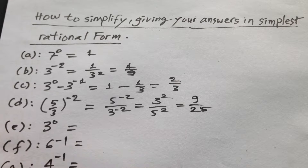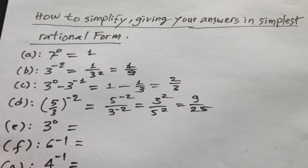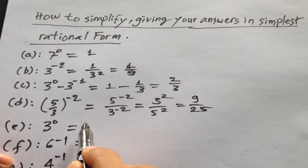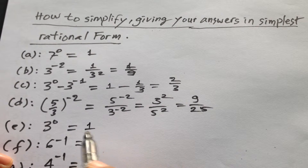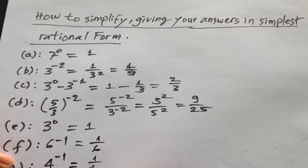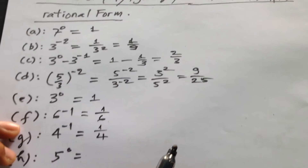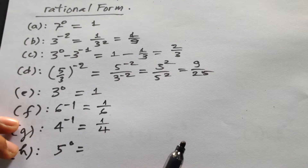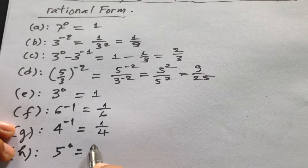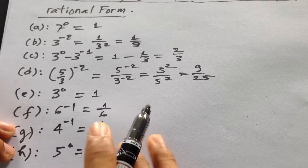How about 3 to the power 0? 3 to the power 0 is 1, and it is 1 over 6 — we need 1 over 4. How about 5 to the power 0? It is 1.